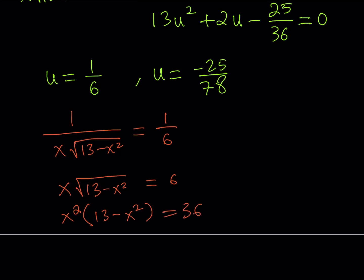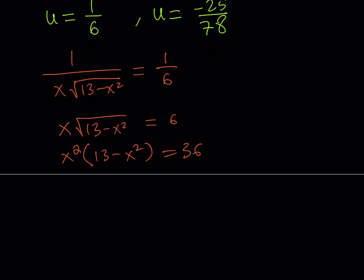If you square both sides, you're going to get x squared times 13 minus x squared is equal to 36. Now, even though u comes from a quadratic equation, x is not going to come from a quadratic equation. Well, sort of. It is. Okay. How does that work? If you distribute, you get 13x squared minus x to the fourth power is equal to 36. Obviously, when you put everything on the positive side, which is the right-hand side, we get something like this, right?